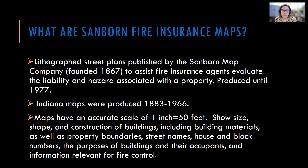Indiana maps in particular were produced between 1883 and 1966. What's unique about these maps compared to other types is that they are made at a very accurate scale: one inch equals 50 feet. They show the size, shape, and construction of buildings, including building materials such as wood, brick, stone, or adobe, as well as property boundaries, street names, house and block numbers, the purpose of buildings, and who occupied them. They identified if buildings were dwellings, churches, offices, or specific types of businesses such as furniture stores, groceries, or libraries — and provided information relevant for fire control.